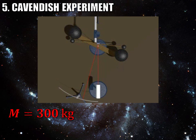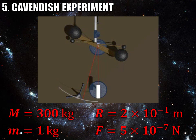Here are the experimental values. The big mass was 300 kilograms, the little mass was 1 kilogram, the distance between the masses is 20 centimeters, written as 2 times 10 to the negative 1 meters. The force calculated from the measured angle was 5 times 10 to the negative 7 newtons. Now we just take these quantities and plug them into the universal gravitation equation to find G.